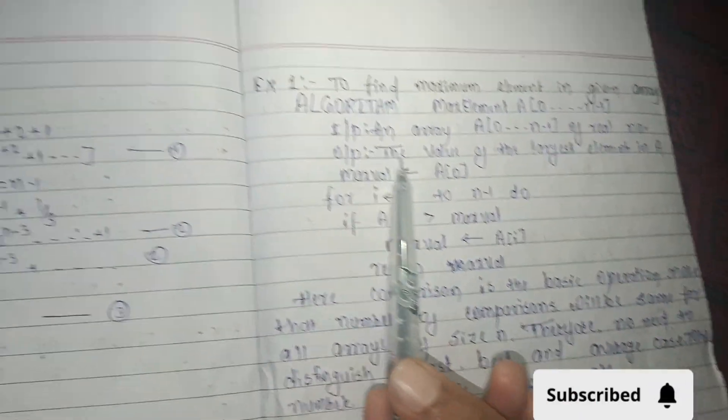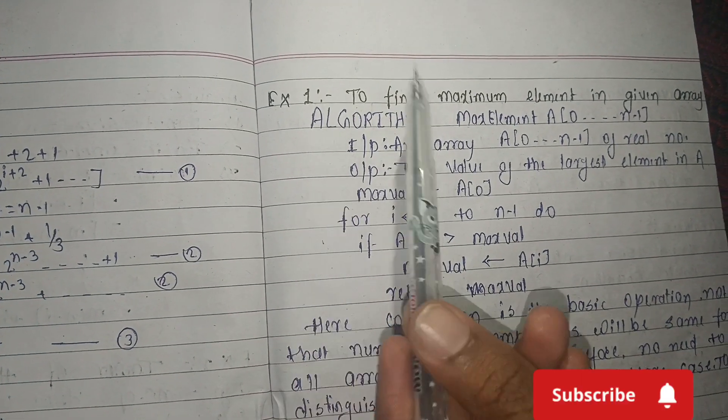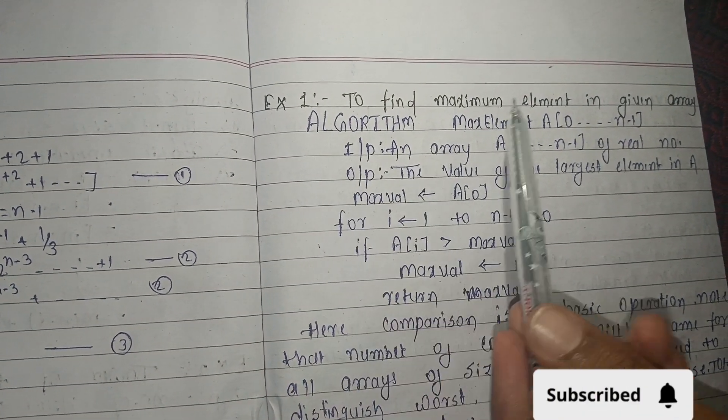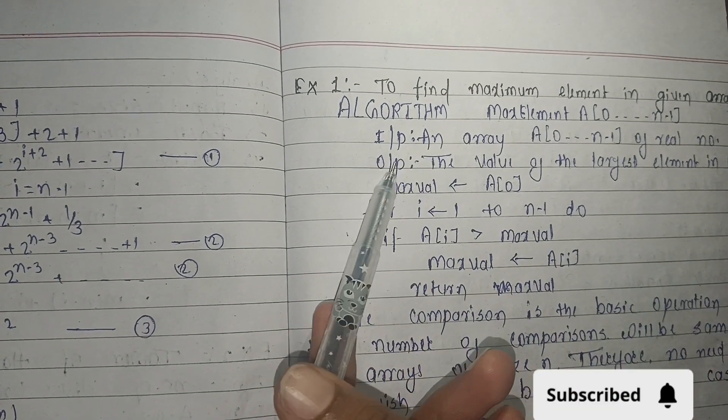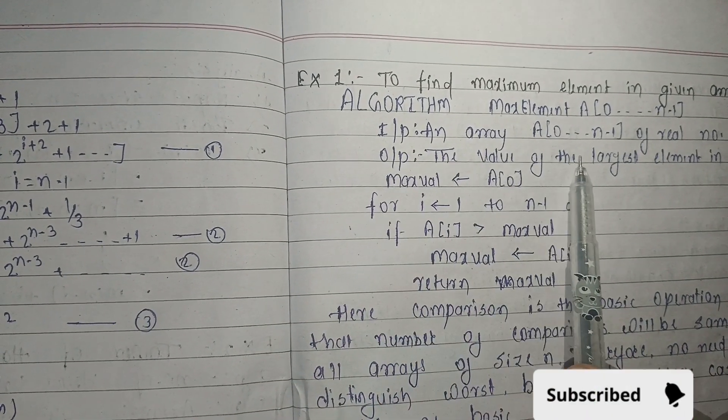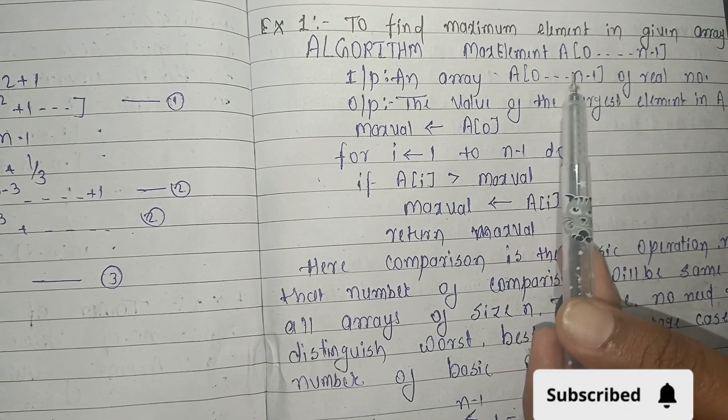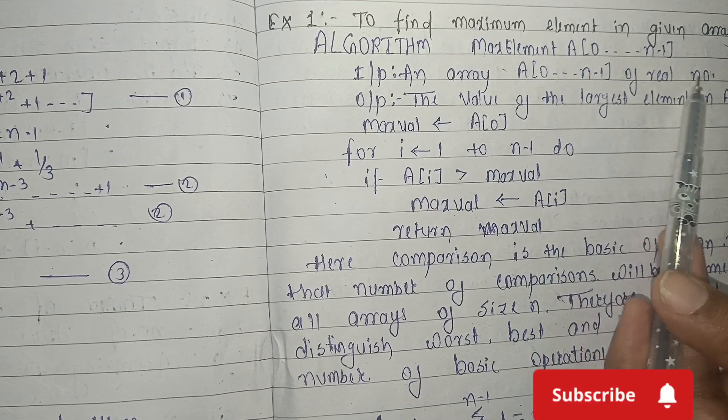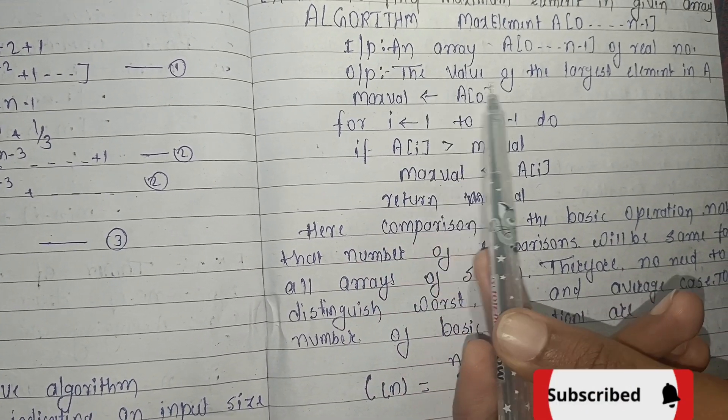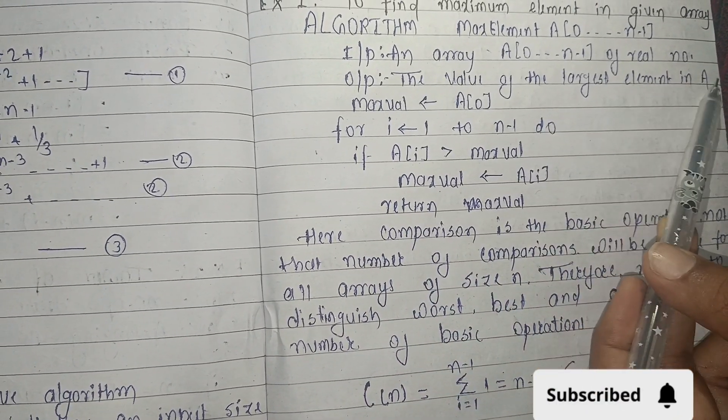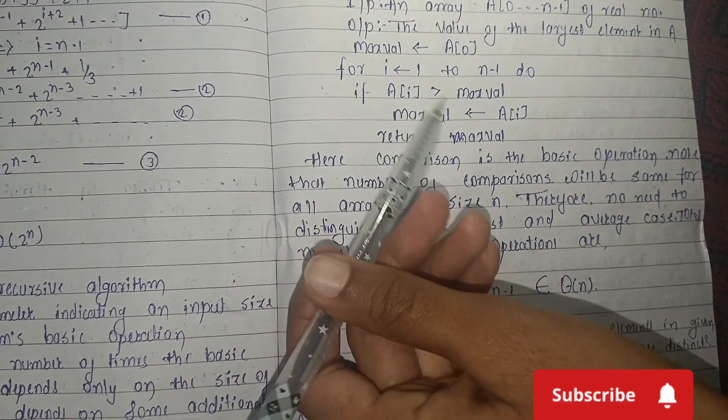Example of non-recursive algorithm: to find maximum element in a given array. Input is an array A[0 to n-1] of real numbers. Output is the value of the largest element in A.